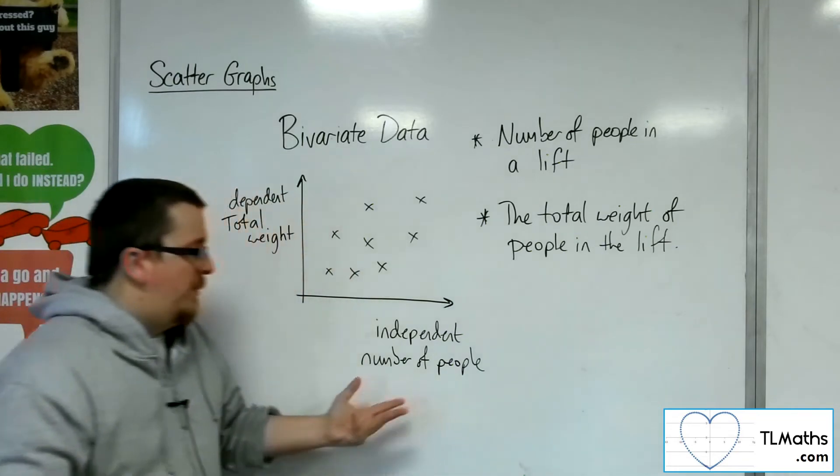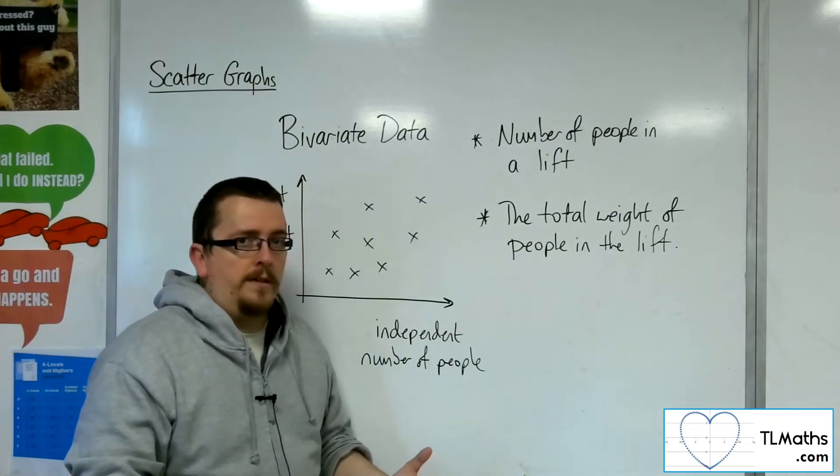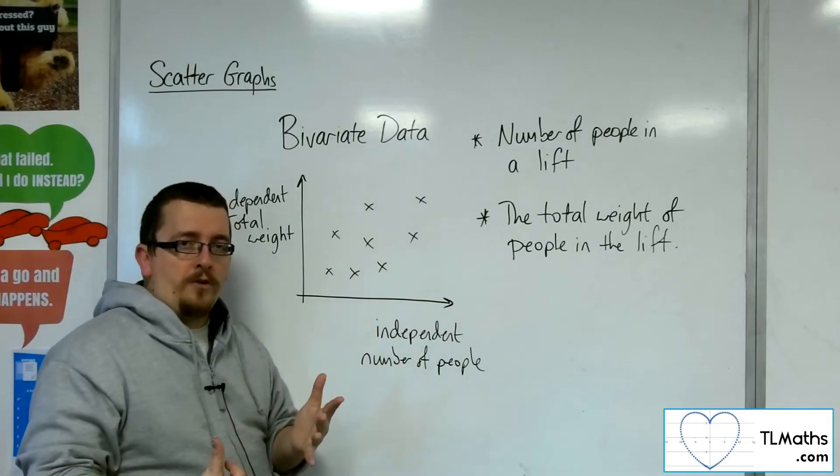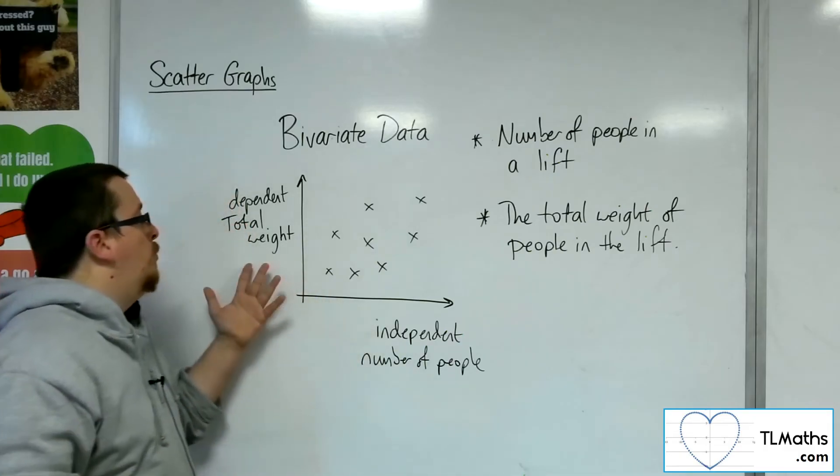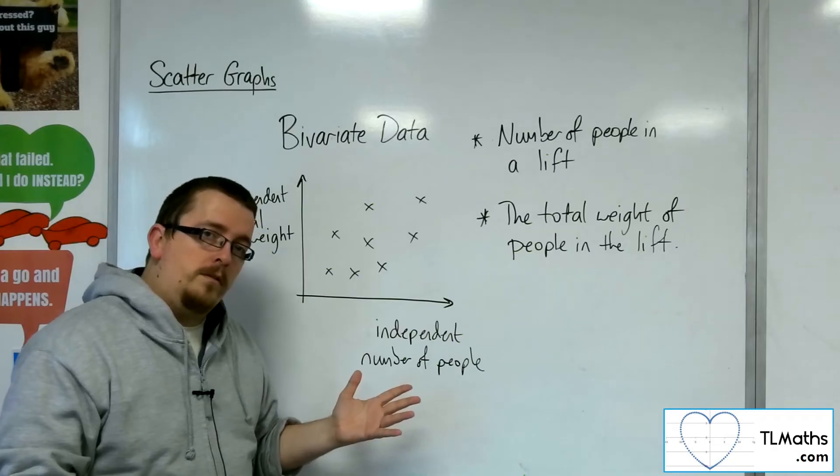So another way to think of the independent variable is the one that you have some control over. OK, I have control over the number of people that are going into the lift, for example. That is something that I could control, whereas their total weight I have no control over.